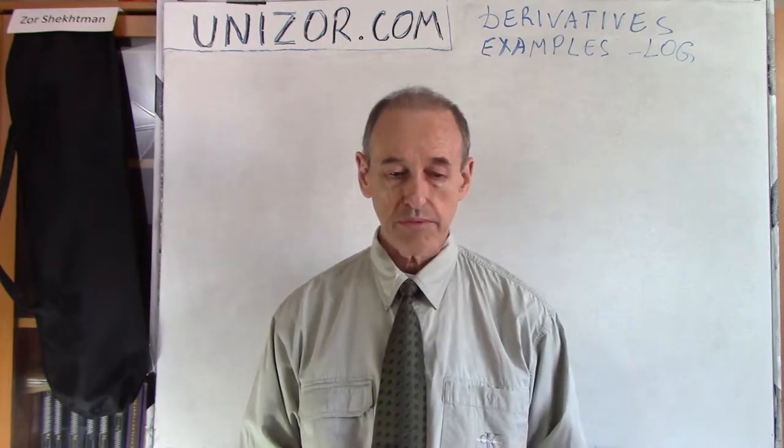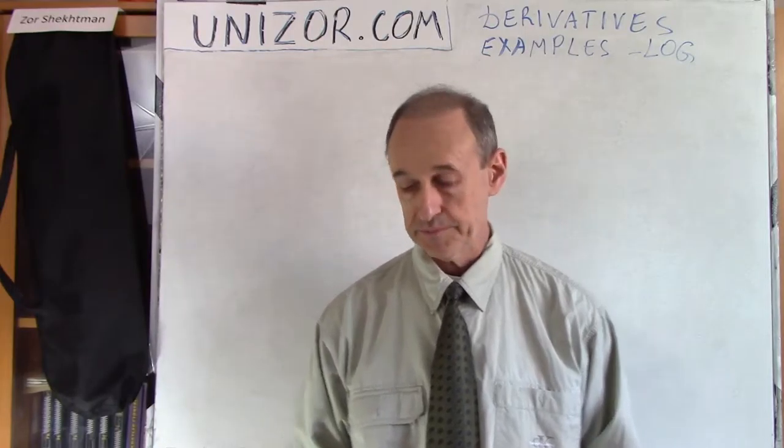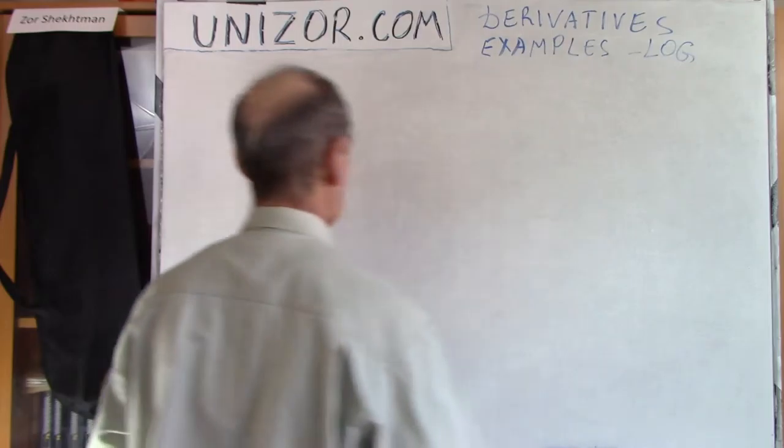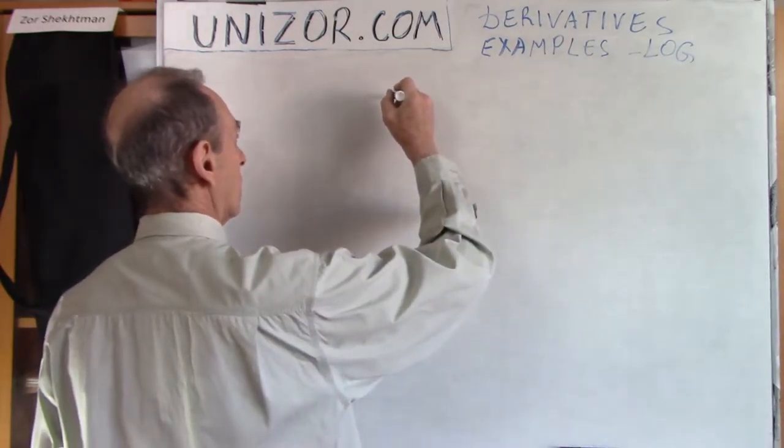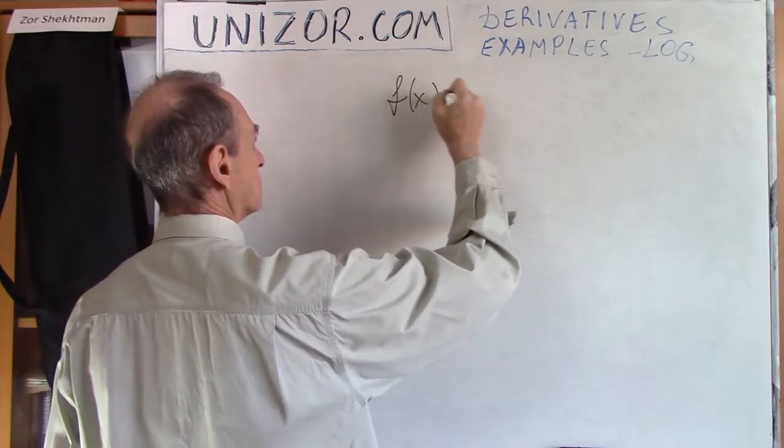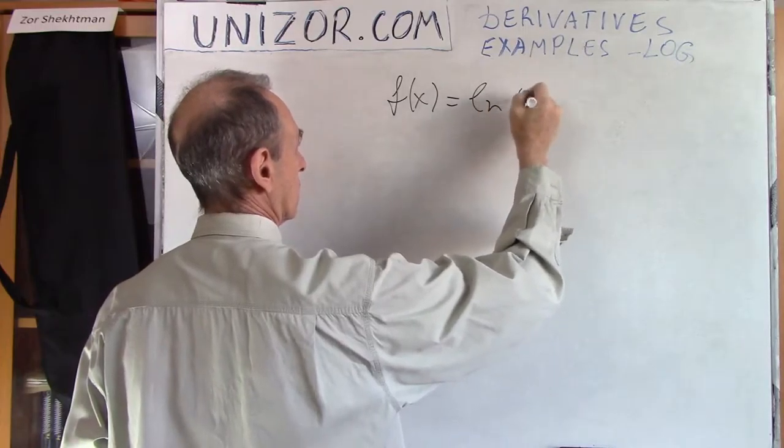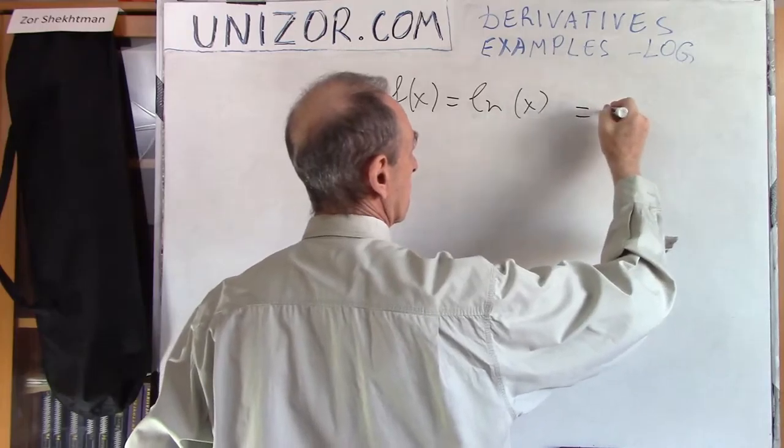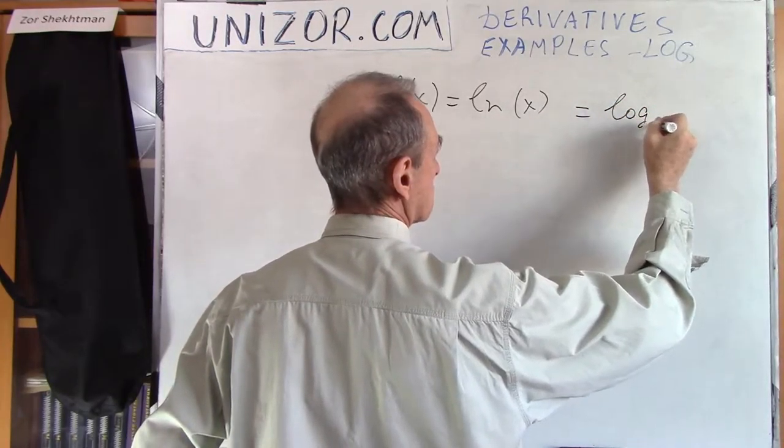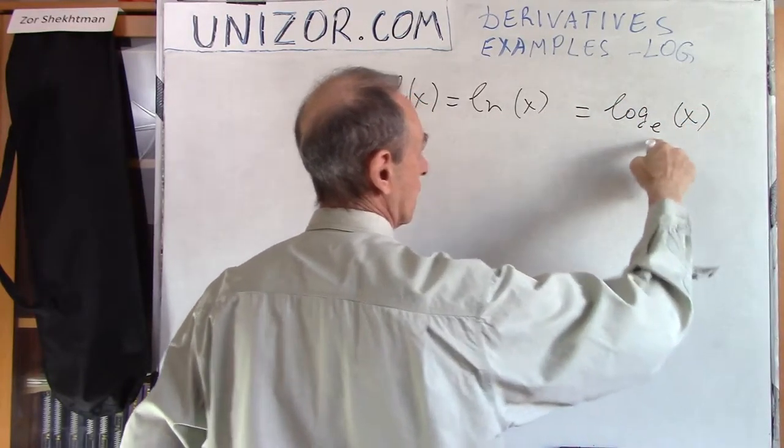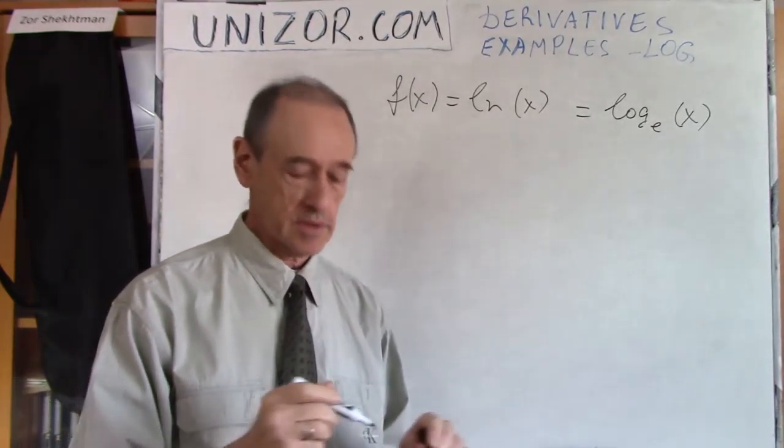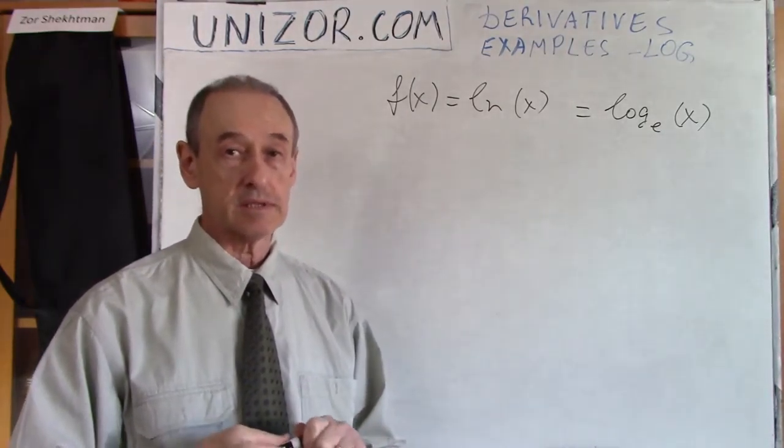So derivative of the logarithm. First of all, I would like to consider natural logarithm. You remember that function natural logarithm of x is basically logarithm with base e, which is approximately 2.71, but this is the fundamental constant of calculus.